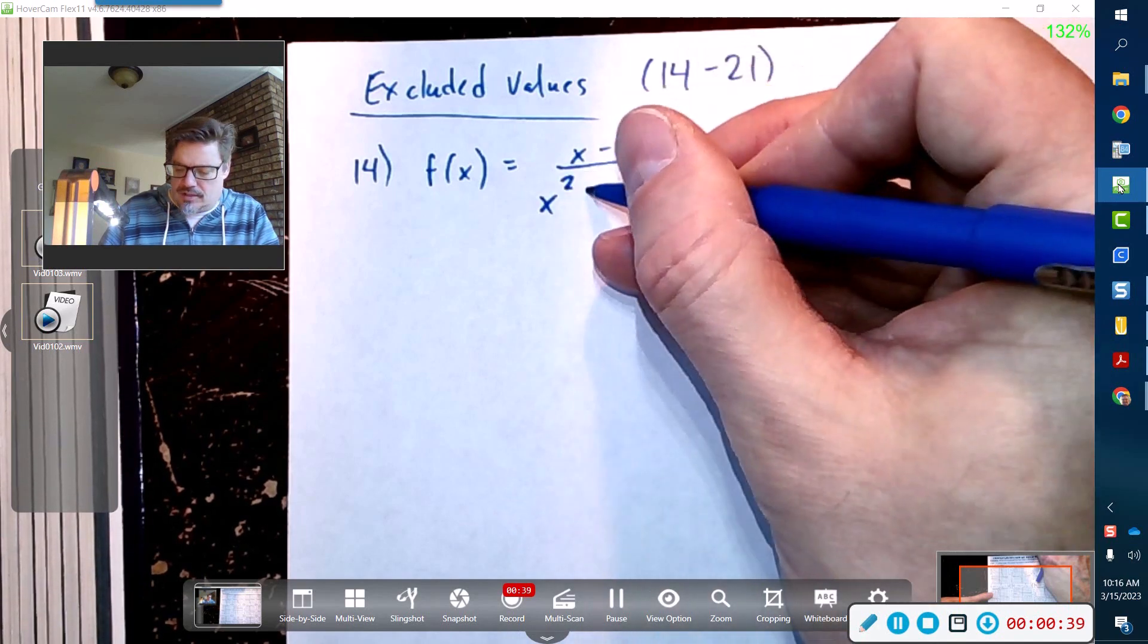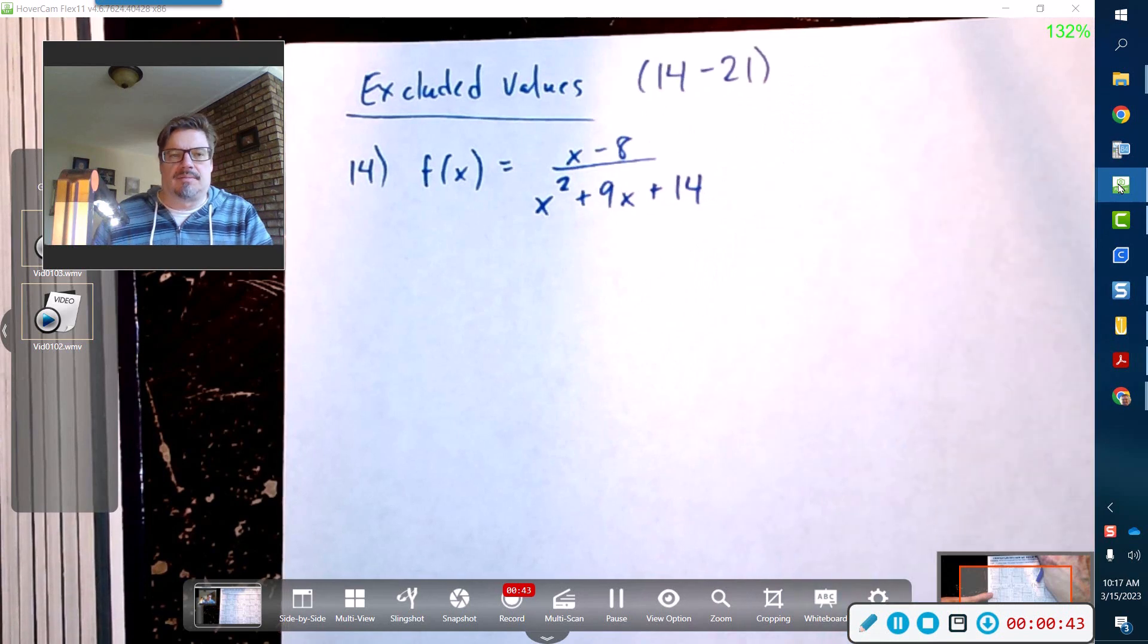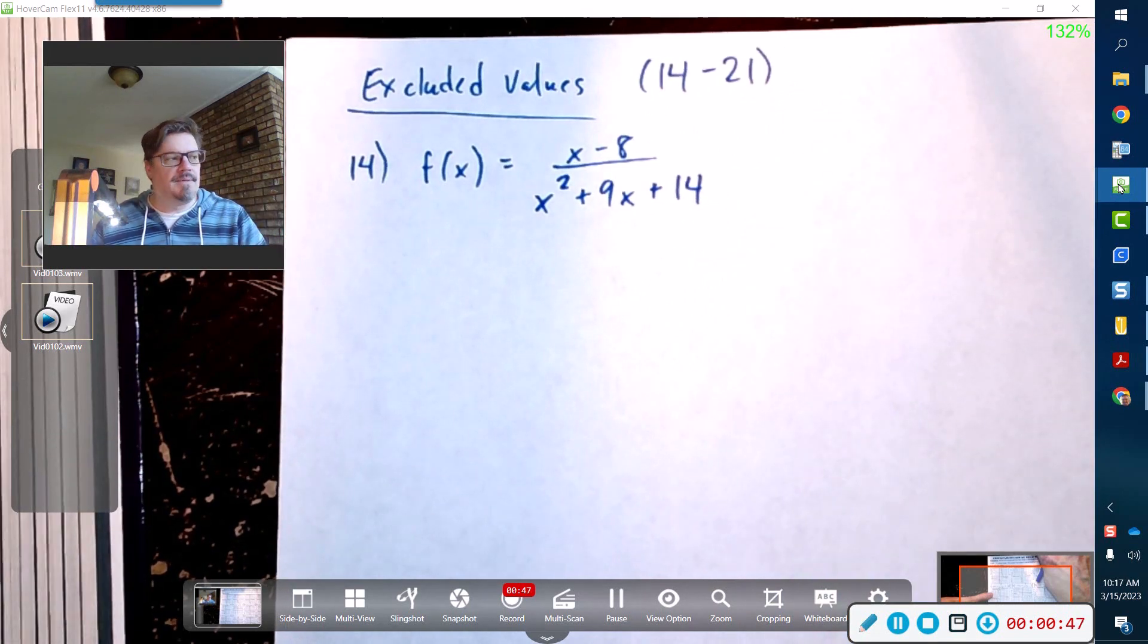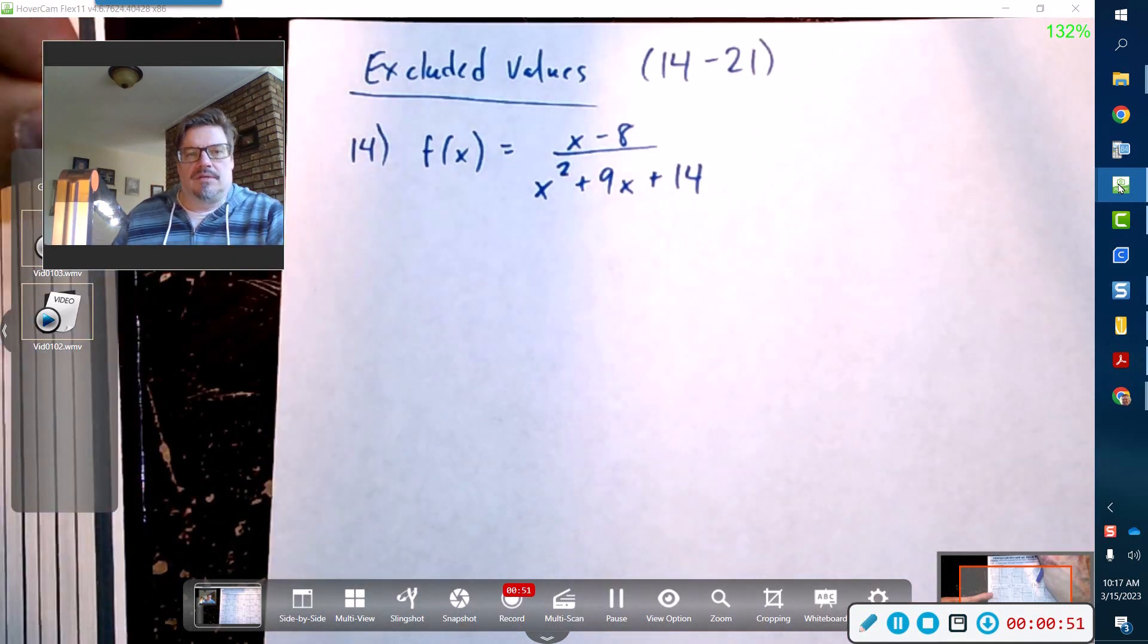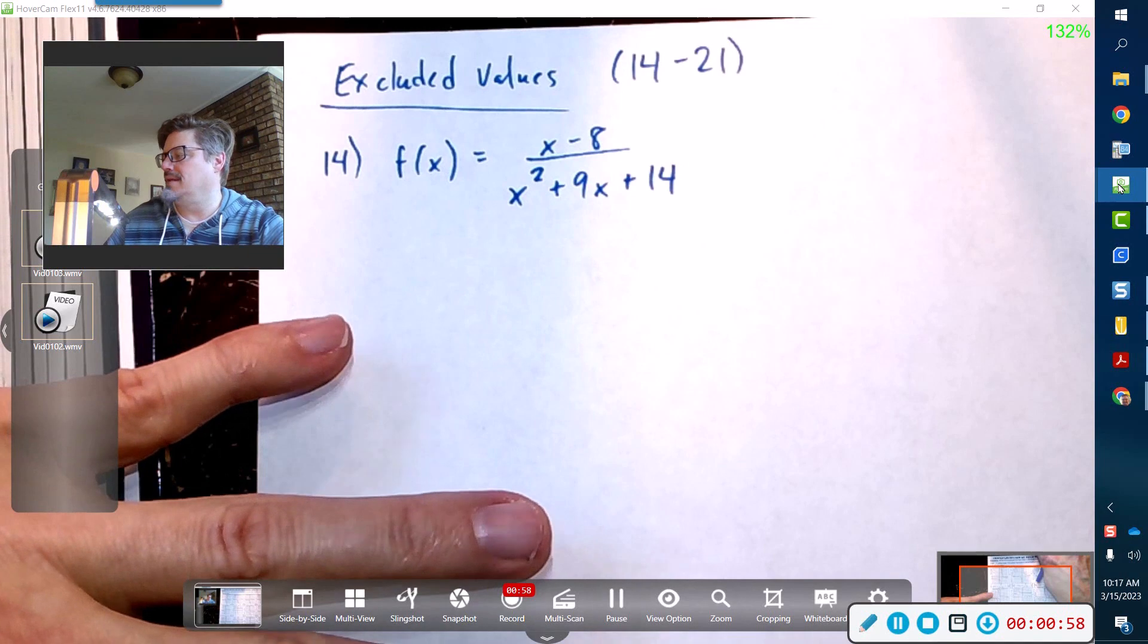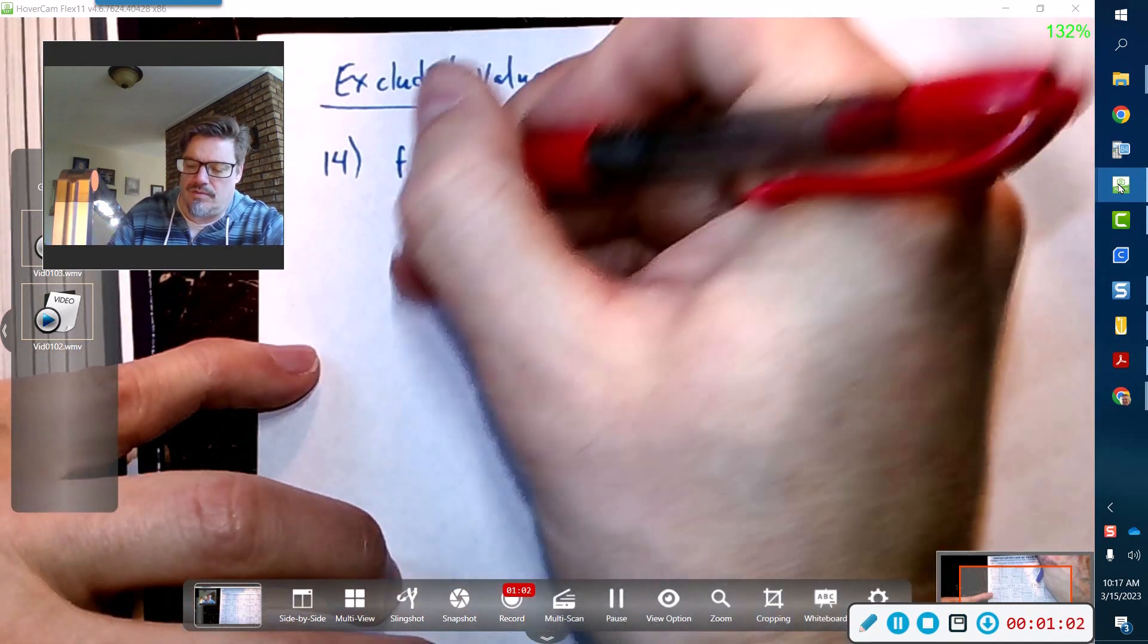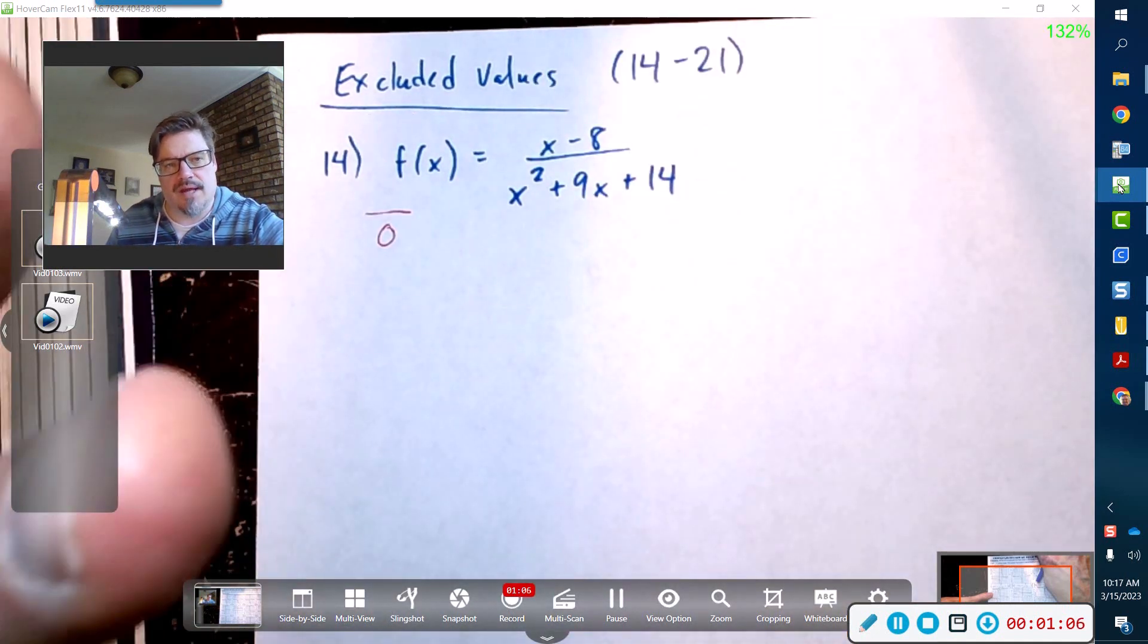This is a situation where sometimes it's very important, crucial, to know what x cannot be. If you have a computer program, you need to make sure that you don't have numbers that will crash your program.